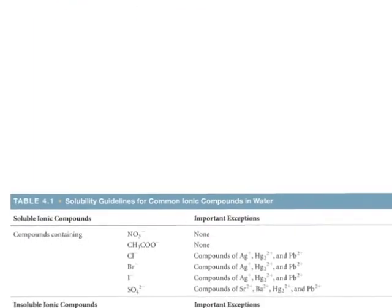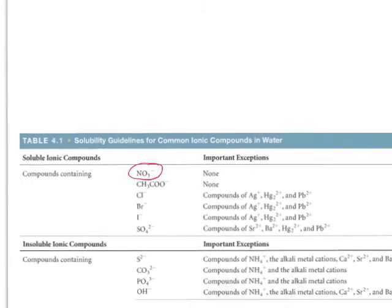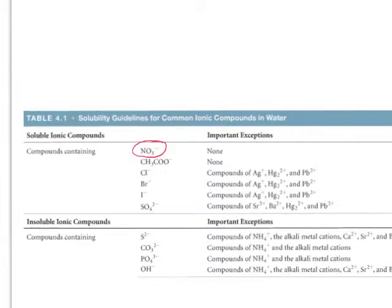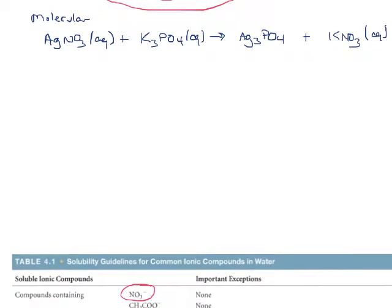Looking at the solubility rules: anything containing nitrate is going to be soluble, so potassium nitrate is aqueous. Then checking silver phosphate — phosphate is in the insoluble section, and there's no exception listed for silver. So silver phosphate is insoluble, meaning it is going to be our solid precipitate.